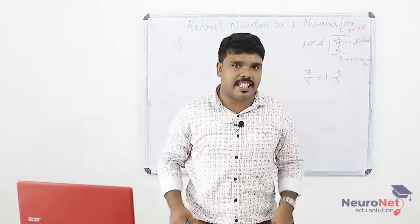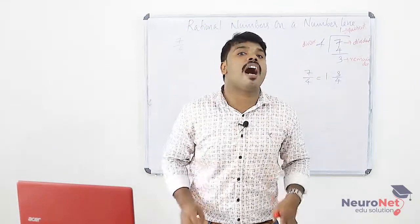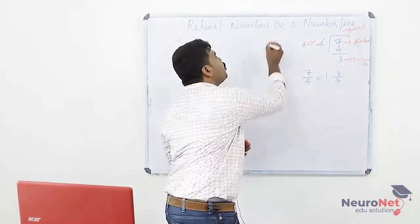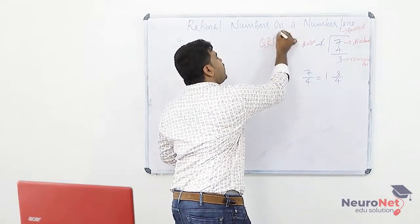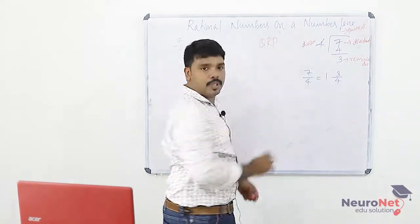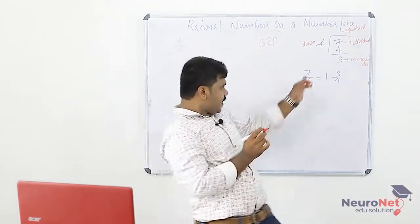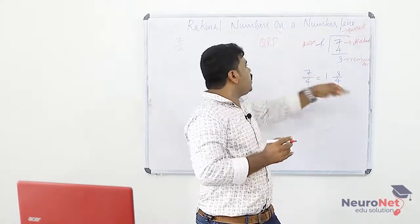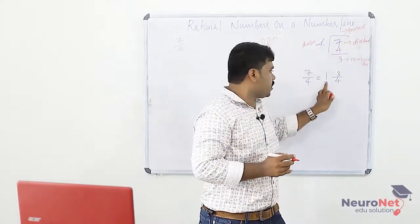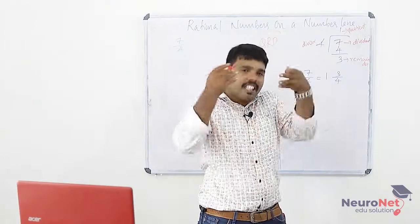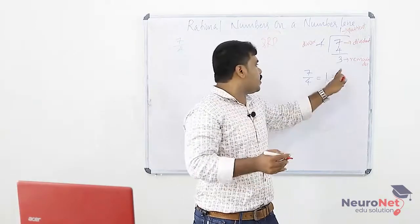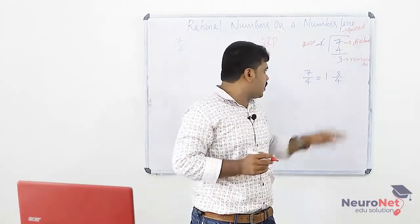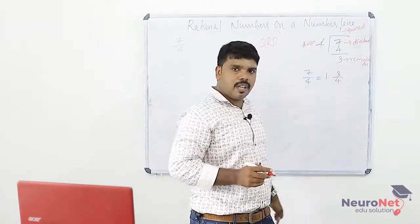A mixed fraction can be found using the QRD method. For 7 by 4: Q means quotient which is 1, R means remainder which is 3, D means divisor which is 4. So 7 by 4 equals 1 and 3 by 4 as a mixed fraction.